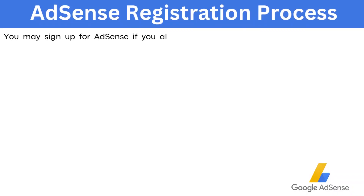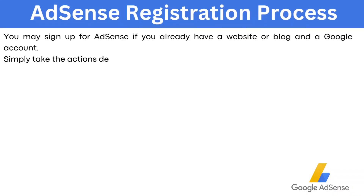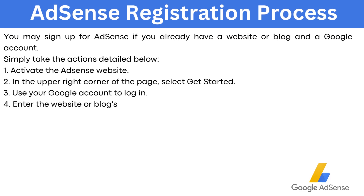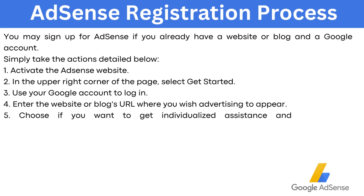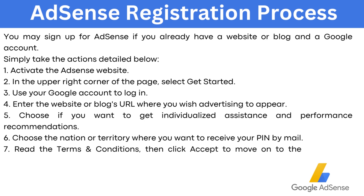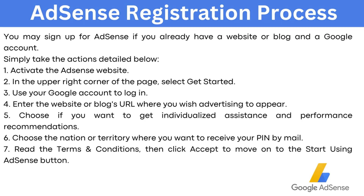AdSense registration process: you may sign up for AdSense if you already have a website or blog and a Google account. Simply activate the AdSense website, select Get Started in the upper right corner, use your Google account to log in, enter the website or blog URL where you wish advertising to appear, choose if you want individualized assistance and performance recommendations, choose the nation or territory where you want to receive your PIN by mail, then read the terms and conditions and click Accept to move on to the Start Using AdSense button.